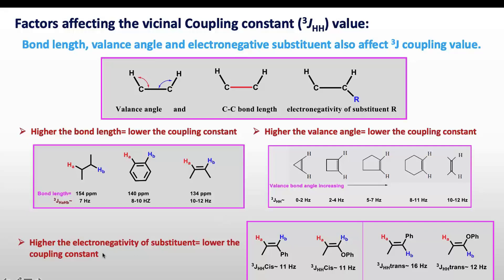The third factor is electronegative substituents. For cis vicinal protons the coupling constant is around 11 Hz, but replacing phenyl with an electronegative group (OPh) reduces this to around 8 Hz. Electronegative substituents pull electrons from the bond, reducing orbital communication and therefore decreasing the coupling constant. For trans protons the original coupling constant is 16 Hz, but replacing phenyl with an electronegative group reduces it to 12 Hz. As electronegativity of the substituent increases, the coupling constant decreases.